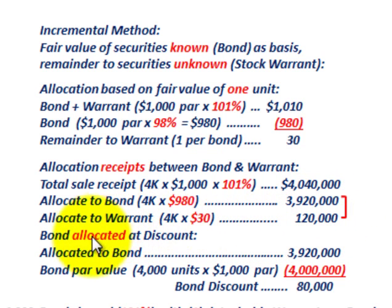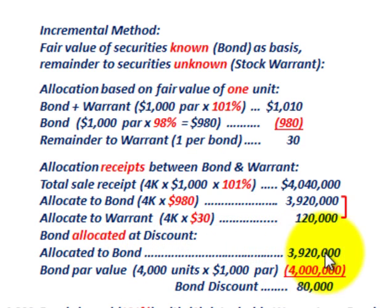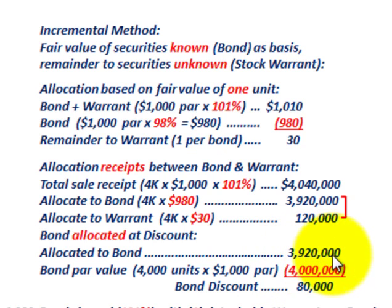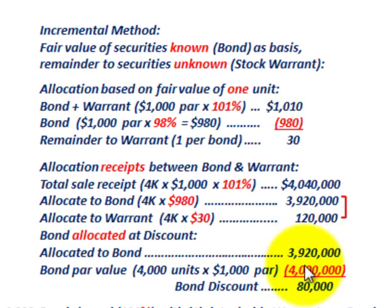We also have to deal with a bond discount or bond premium. In this case, we have a discount because the bond was sold at a discount. What we allocated to the bond was $3,920,000. The bond's par value is 4,000 bonds at $1,000 par, totaling $4,000,000. So the difference — $3,920,000 less $4,000,000 — gives us a discount on those bonds of $80,000, because we allocated less in total value of the bonds versus the par value.